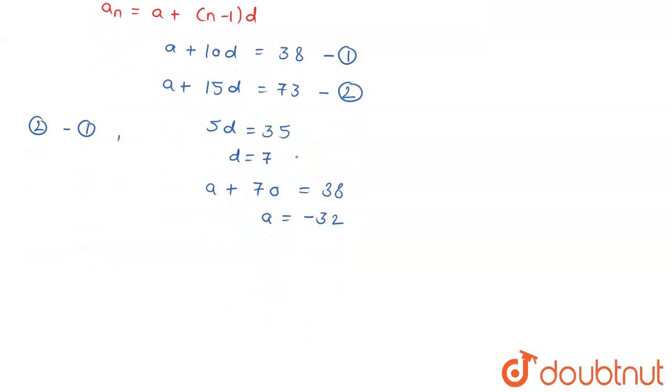So this time you can write down directly that a₃₁ is equal to a which is minus 32 plus (n minus 1). In this case, n is 31, that is 31 minus 1 is 30 into d and d is going to be 7.